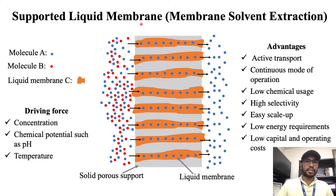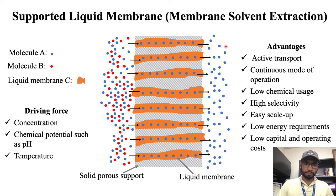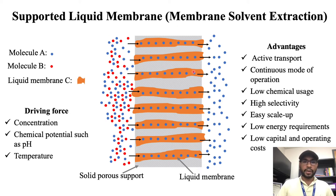In the separation process, the mixture comes in contact with the membrane, and this liquid membrane allows molecule A to pass through it while rejecting molecule B. As a result, pure molecule A can be recovered from molecule B. The driving force for this separation could be the concentration gradient, chemical potential, or temperature.